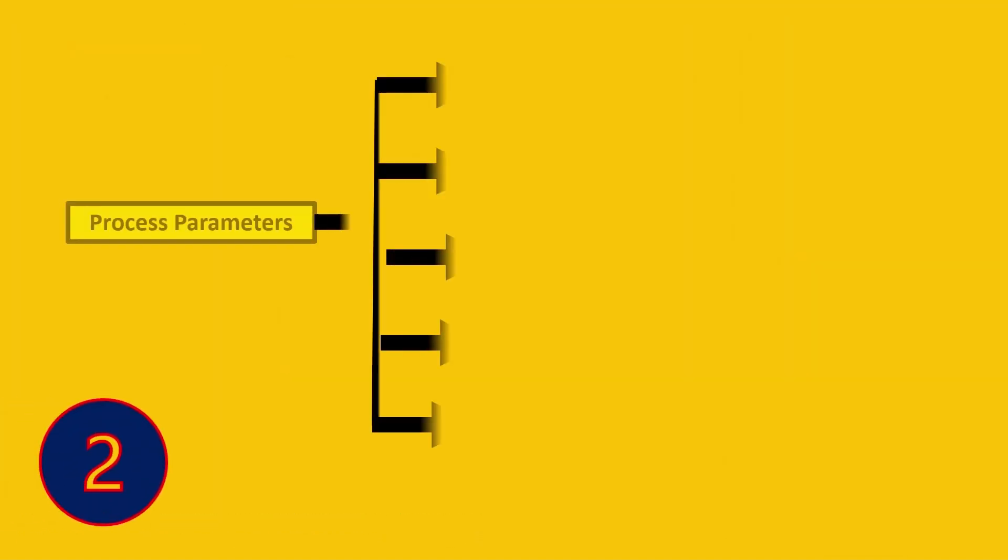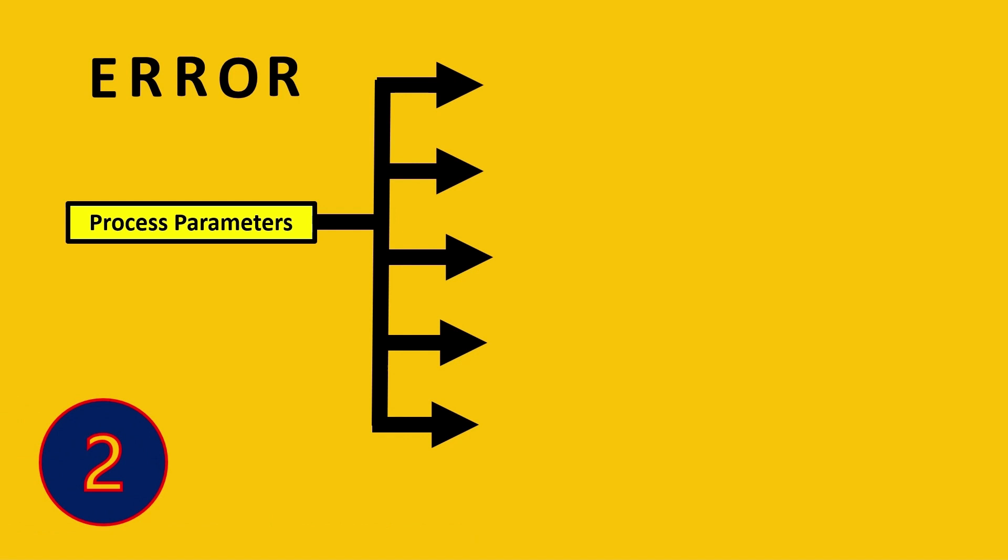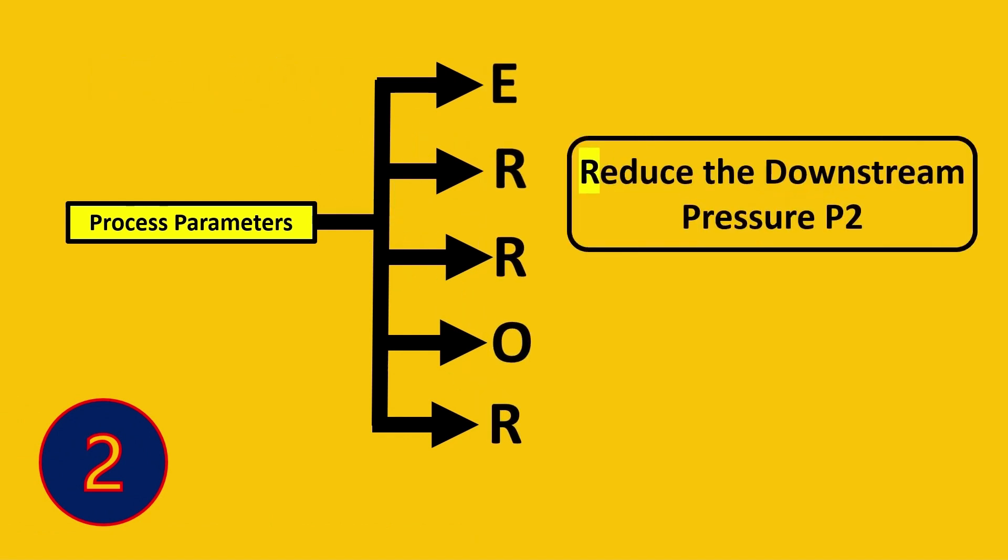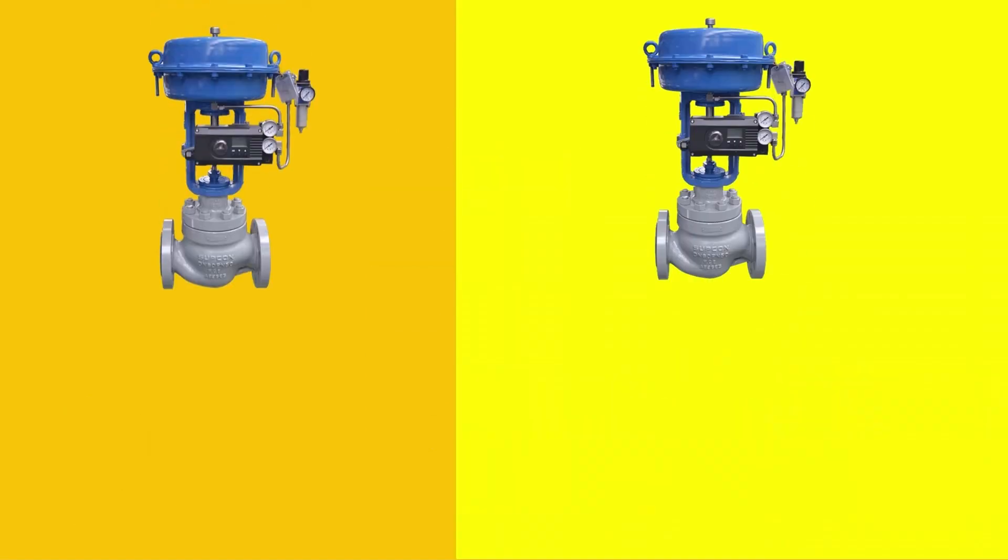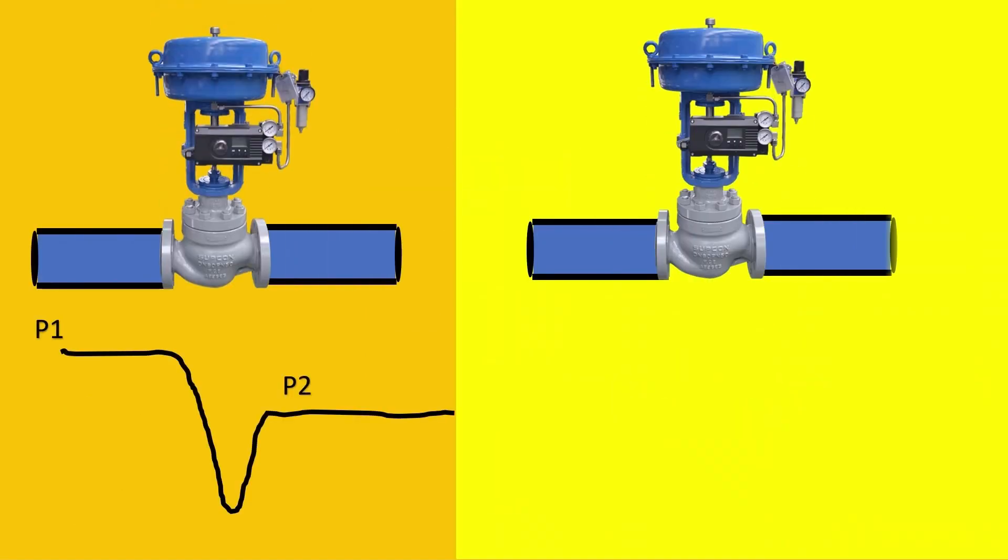Now let's look at the second amazing solution. As we said, the acronym was ERROR. The second one stands for R, which stands for reduce the downstream pressure P2. Imagine you have two valves with the same pressure drop curve.